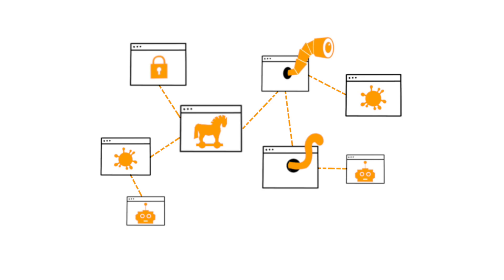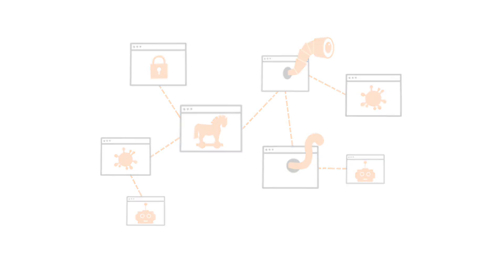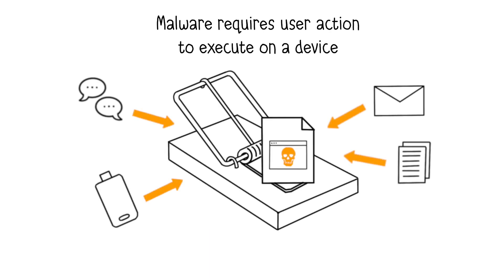Now, let's look at the main methods malware uses to propagate. Cybercriminals employ various tactics to trick users into downloading and executing malware. Often, malware is transmitted via email as an attachment. Malware may also be contained within documents, which can be in the form of EXE, ZIP, Word, Excel, or even PDF files. Booby-trapped documents can also be shared via removable media, such as a USB key or hard drives.